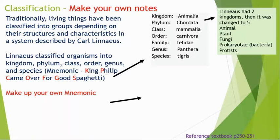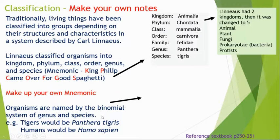Animals are always named by what we call the binomial system. 'Bi' means two, 'nomial' means name — so it's a two-name system. We always use the genus and the species. In the example at the top here, the actual name of a tiger as you'd see at a zoo would be Panthera tigris. Notice that Panthera has a capital P.